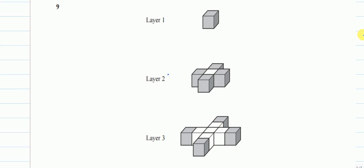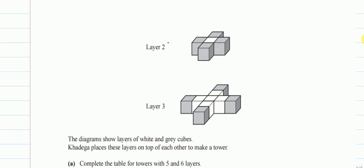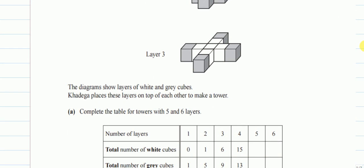We have layer 1 which has only a gray block. Layer 2 has one white block and four gray blocks added at the corners. In layer 3, the gray blocks are replaced with white blocks and four more gray blocks are added at the corners. So each layer replaces the previous gray blocks with white blocks and adds four new gray blocks at the corners.